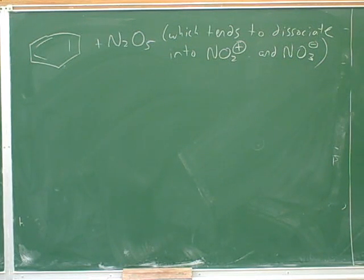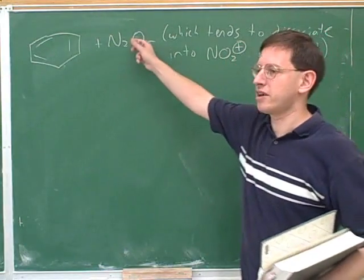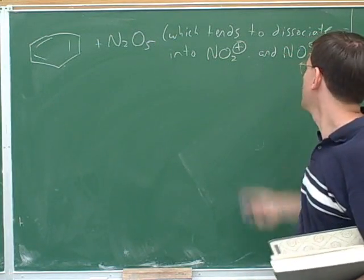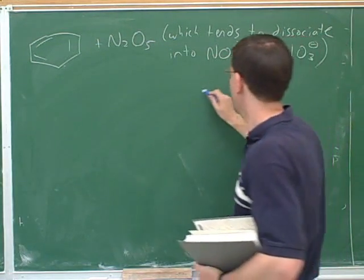So again, we want to predict the major product. Let's see, did you read the hint there? Okay, so the hint really gives the game away. They told us that this starting material is going to dissociate into these two things. Well, this one's not going to be the electrophile, this is going to be the electrophile.